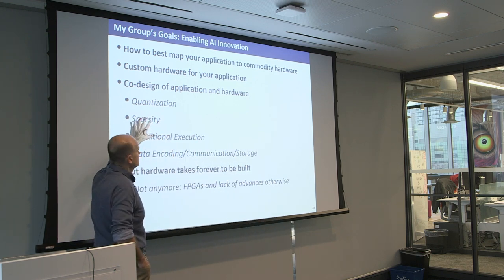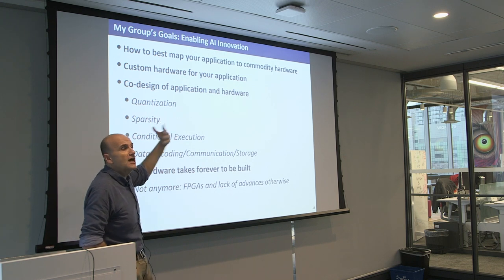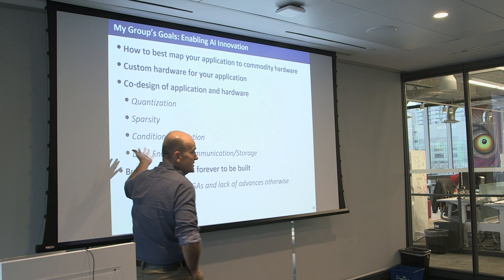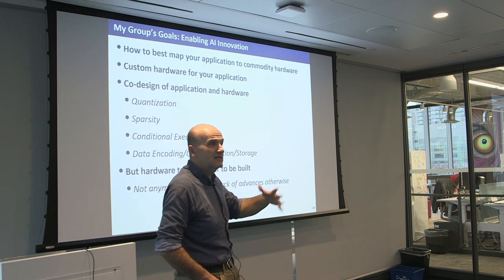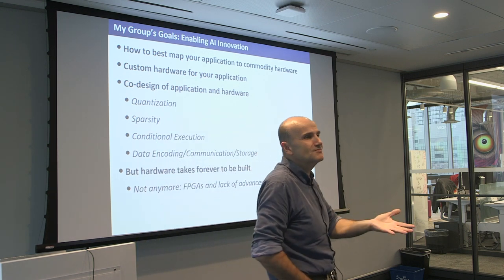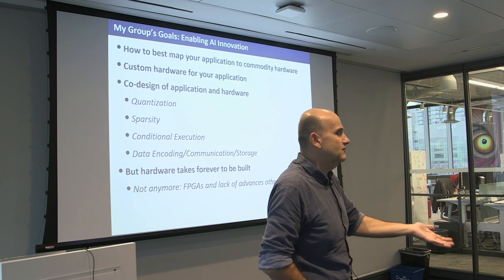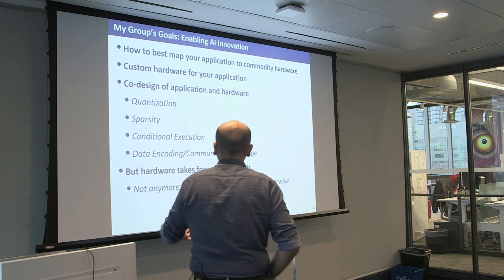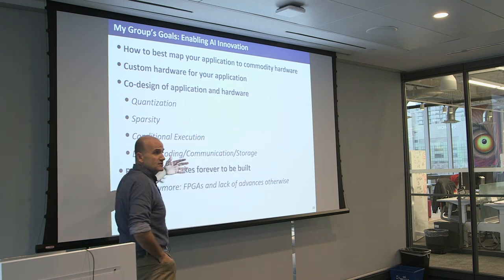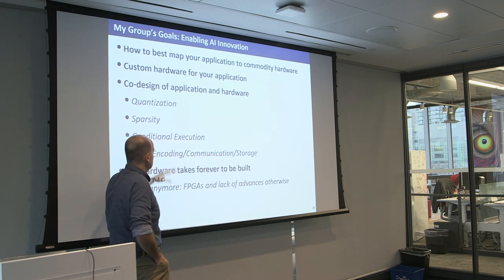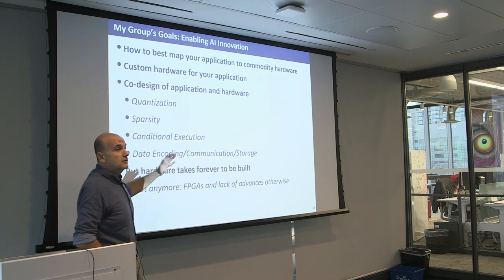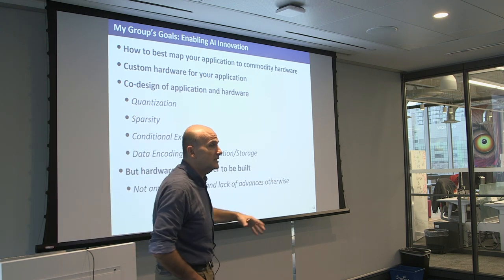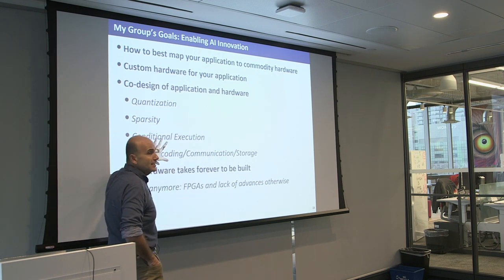There are examples of co-design that may be close to home: quantization, which you need for practical performance on specific devices; sparsity, where you trim things to get a particular level of performance on actual hardware; conditional execution — trimming things depending on input; and data encoding and communication — how you store to memory and send things across machines.